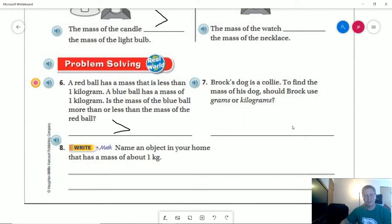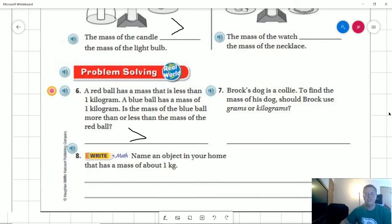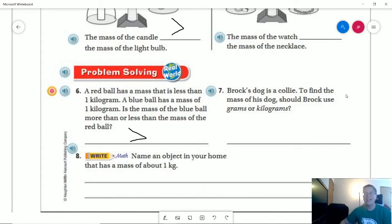Name an object in your home that has a mass of about one kilogram. So those of you in third grade, if you have your vocab book at home, which I believe everyone should, that is a smaller book that would have about the mass of one kilogram, or maybe two or three. But that would be an option that you could use.